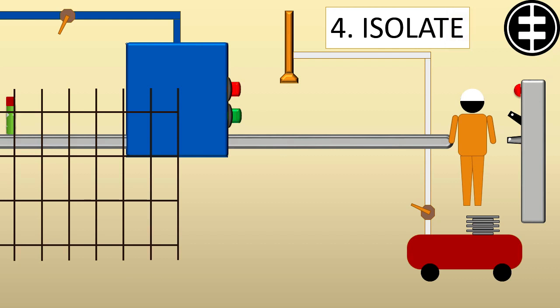4. Isolate. Isolate machine or equipment from its energy sources. For example, turn off main circuit breaker.